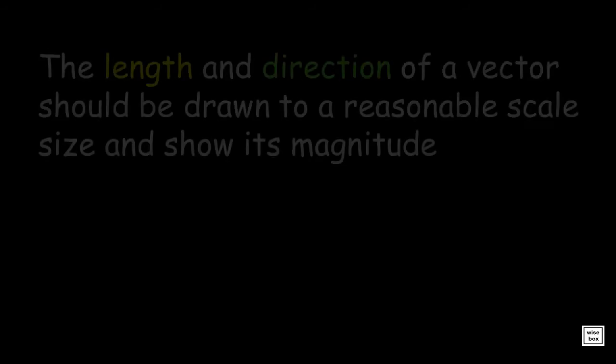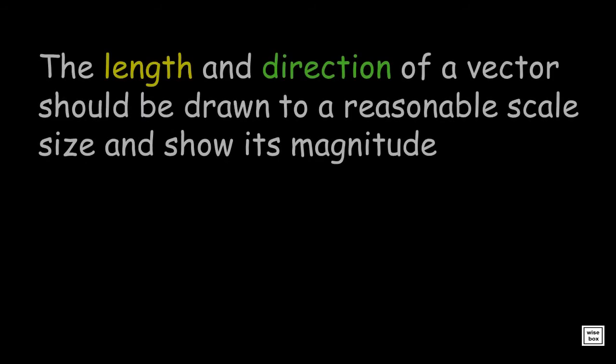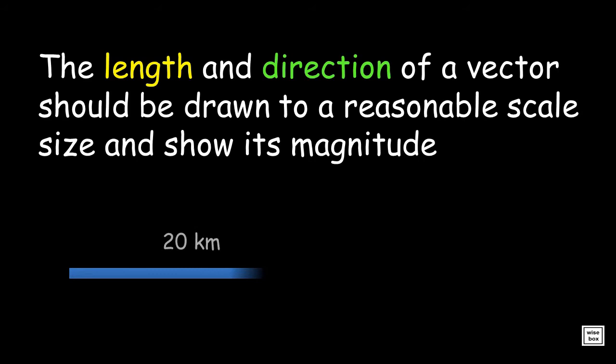Take note: the length and direction of a vector should be drawn to a reasonable scale size and show its magnitude. Notice that the length of the second vector was drawn about half of the first vector.